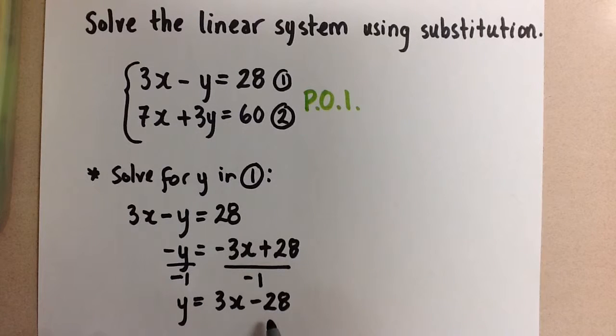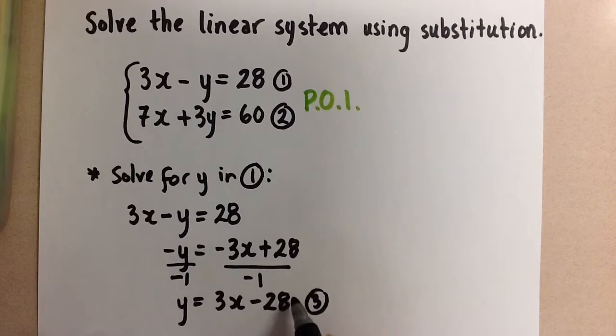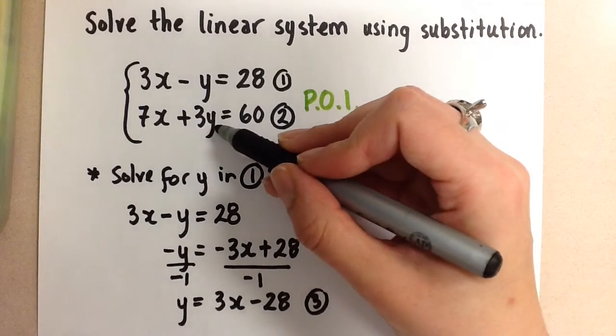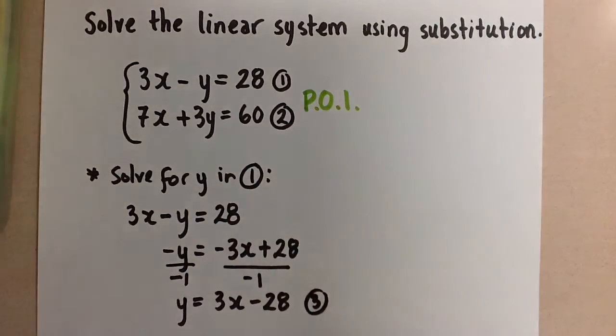So now we've isolated y, and we know that y is equal to 3x minus 28. So wherever I see a y, I can take this equation, and I'm going to sub it in. So let's label this equation number three, and we're going to plug this in to equation number two for the y here, and then we're going to solve for the x.